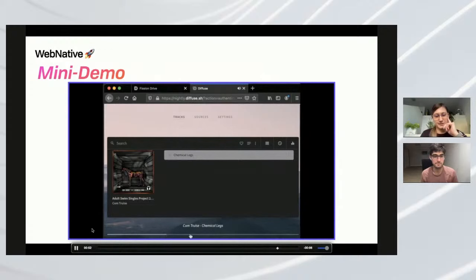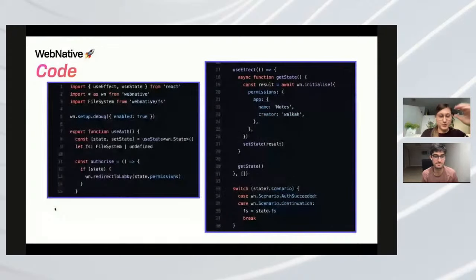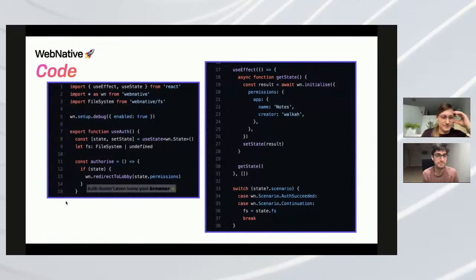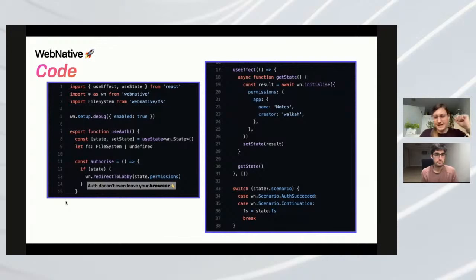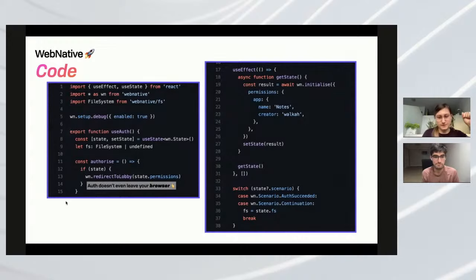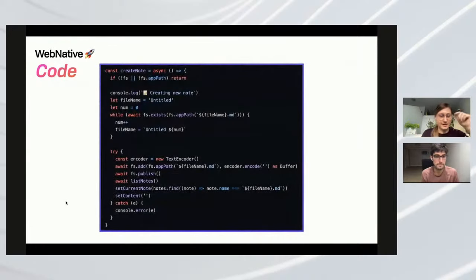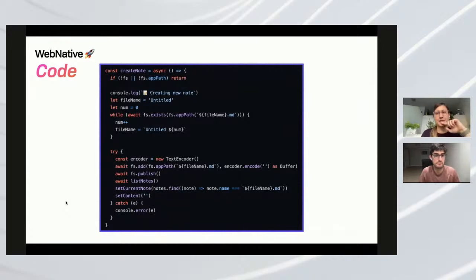Here's what the actual code looks like — the auth portion for the React app. None of this stuff actually leaves the browser. We have a redirection flow, and on the right-hand side you can see webnative.initialize with the app name and creator, then set the state — did that succeed or not? Fairly straightforward flow. For the actual editing of a note, about halfway down in the try block you can see filesystem.add, then this path, then publish — which means persist this and broadcast to anybody who's listening that it's been updated.